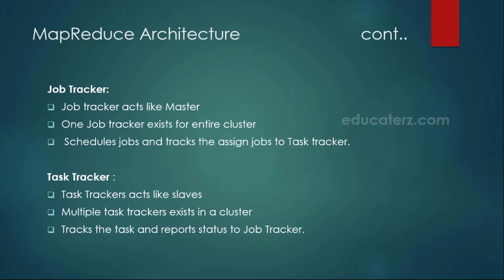Looking at the details of the job tracker: it is a master, consisting of a single job tracker, and it is responsible for scheduling the jobs and monitoring the progress of those jobs. In the case of the task tracker, it is a slave and you can have any number of task trackers. Actual tasks are executed by the task tracker, which then sends status reports back to the job tracker.